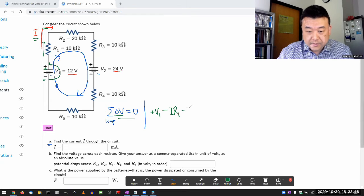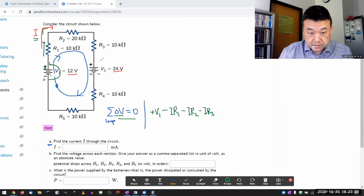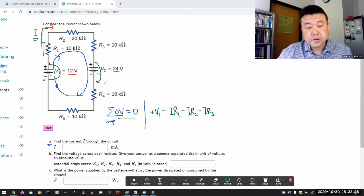So being consistent with this direction, let me write down minus IR2 minus IR3. And then here, I'm going across this battery from the positive to negative terminal. So I'm going to be collecting a negative voltage change of the same magnitude as the battery minus V2. And then let me keep going minus IR4 minus IR5 is equal to zero.